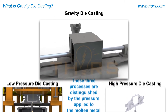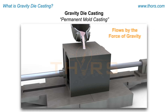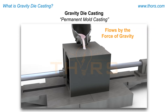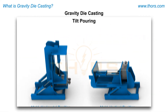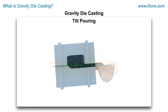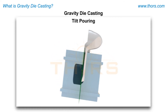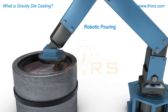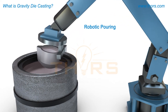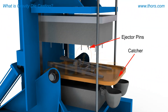In gravity die casting, also known as permanent mold casting, the molten metal flows by the force of gravity without the application of external pressure. Tilt-pouring is a modified form of gravity die casting in which a mechanized system tilts the mold and directs the molten metal into the molds. The molten metal is transferred manually or robotically into the mold or the pour cup. The casting is allowed to cool and the solidified casting is ejected out of the mold.